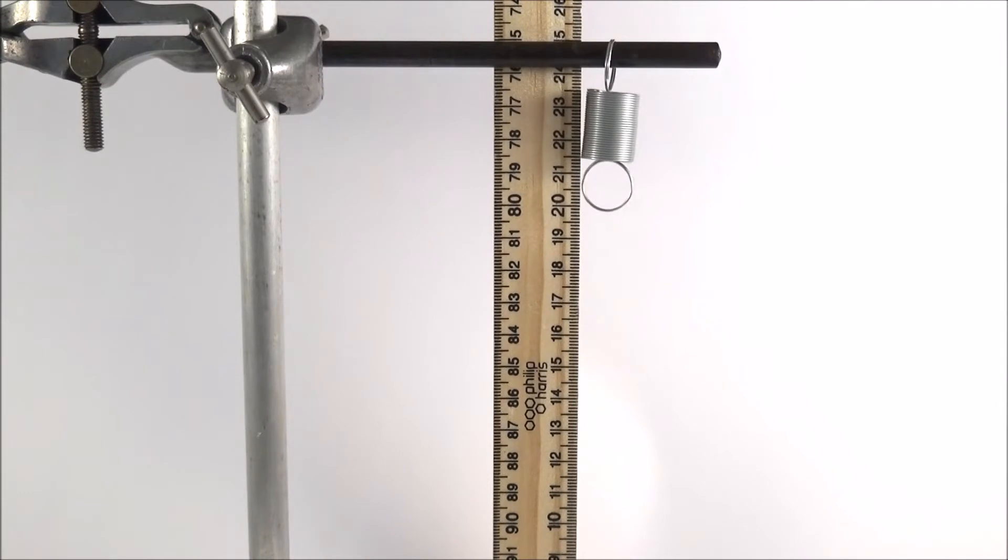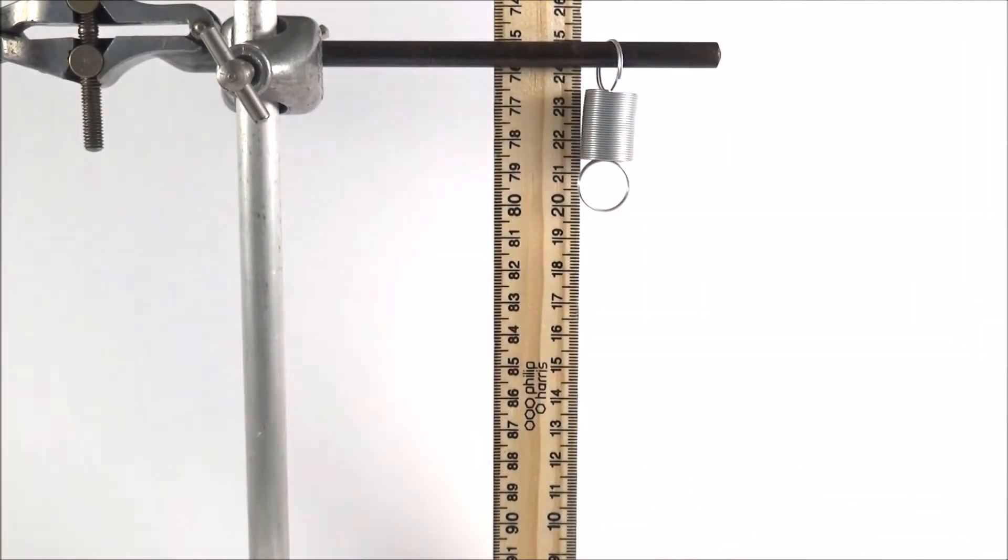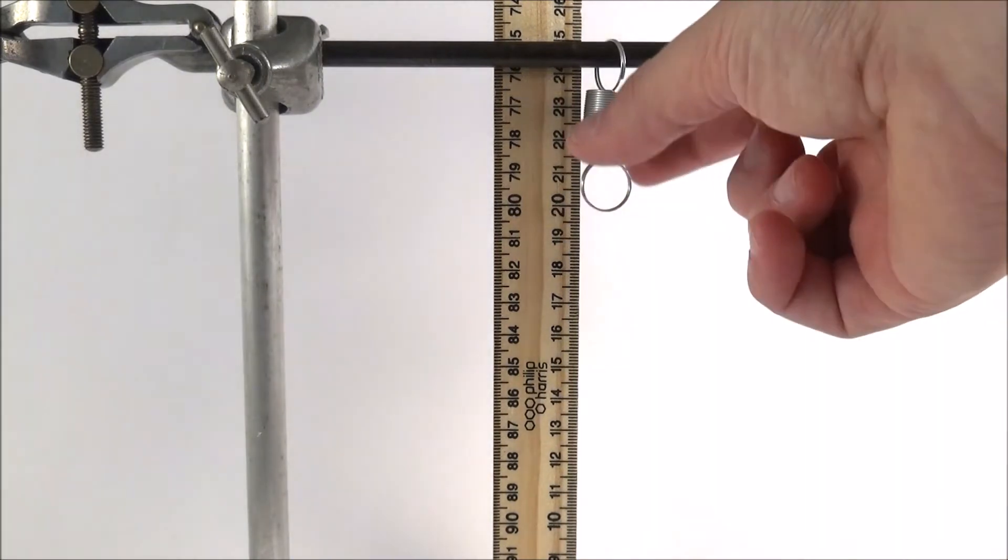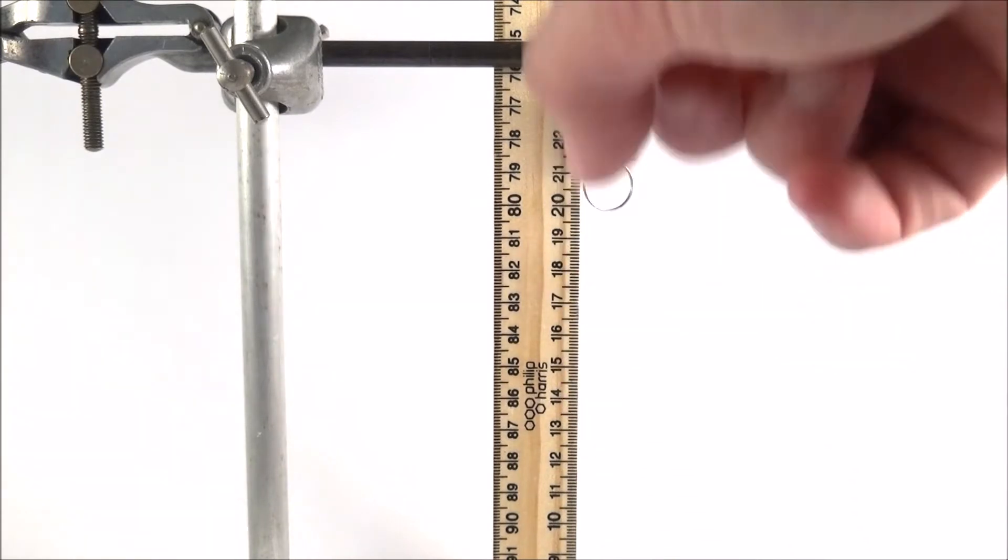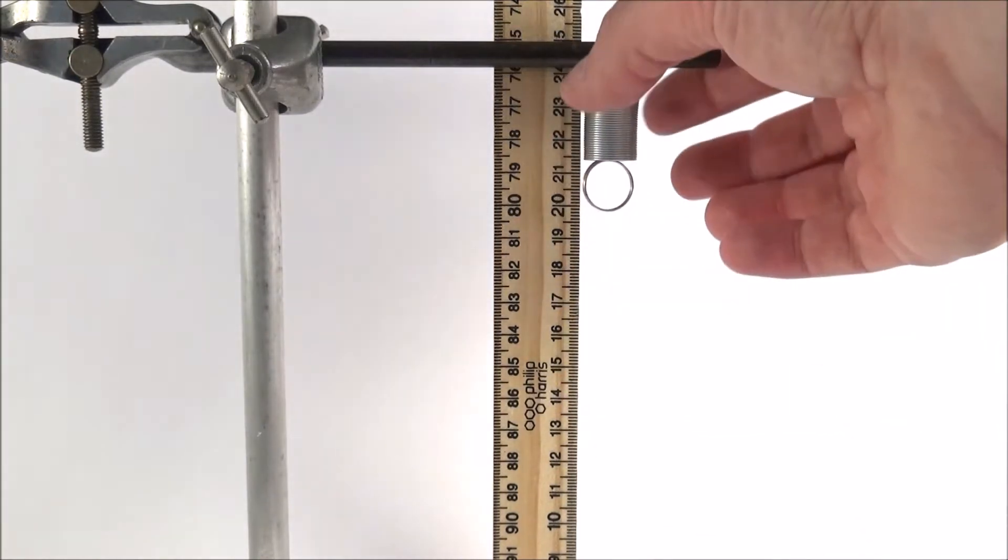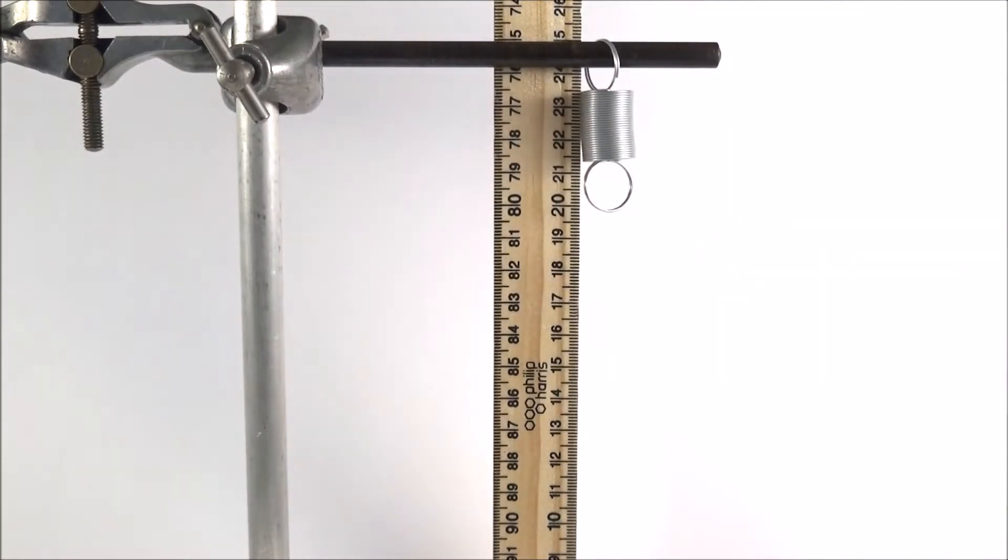So one method I've seen for this investigation is you look at a certain point of the spring, and to do this you want to make sure that nothing's moving, and you want to get your eye down level to this to reduce any parallax error, and then you can record the original starting length of this spring.